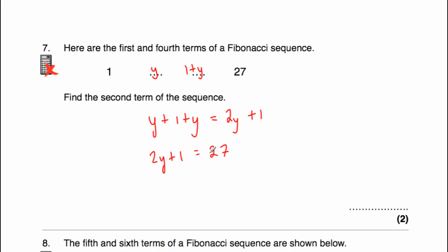So 2y plus 1 is equal to 27. We can just take 1 away from both sides: 2y equals 26. Divide by 2 on both sides and that gives us y equals 13. So this number must be 13, and this number is 1 more than that, so it must be 14. Let's just check: 1 plus 13 is equal to 14, and 13 plus 14 is equal to 27. So what I've done is let the second term equal y, said 1 plus y would be the next term, and then 2y plus 1 has to equal 27, and I've solved it. You could have also used a trial and error approach. The second term of the sequence is equal to 13.